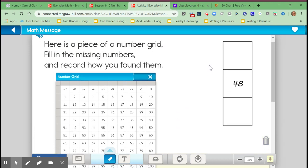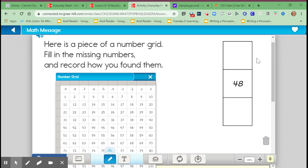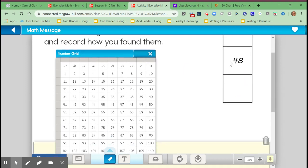And a number grid puzzle will look something like this, where we will have just a portion of this grid over here to the side. And so your job is going to be to fill in these blank spots. So what I'm going to show you how to do today is if you locate the 48 here on the number grid,